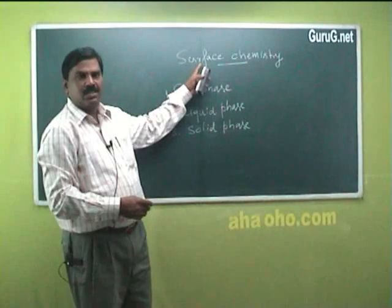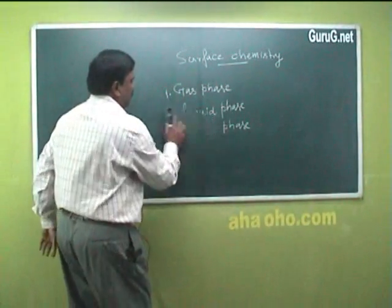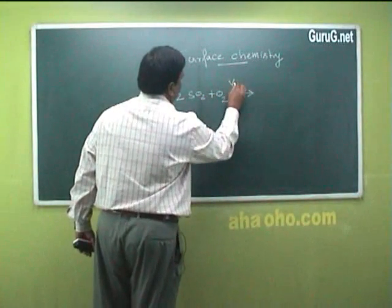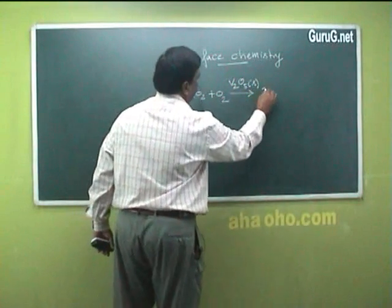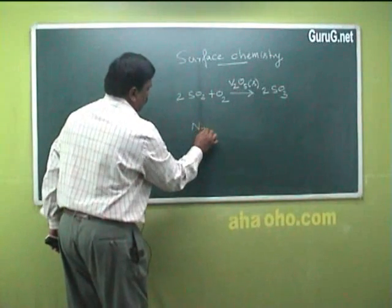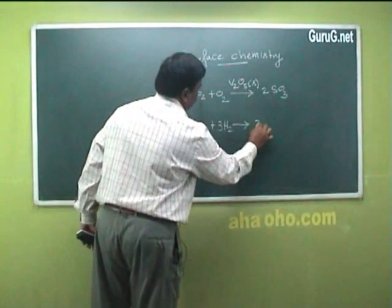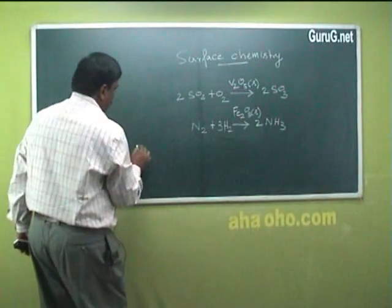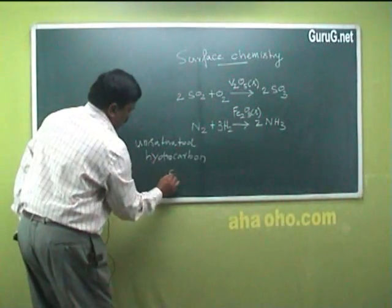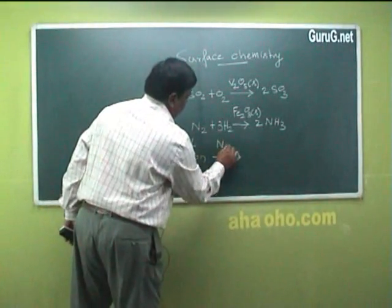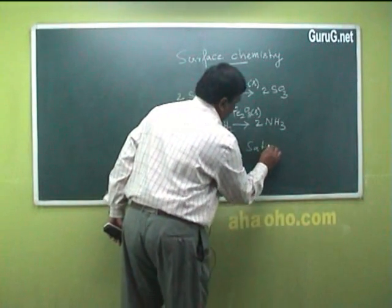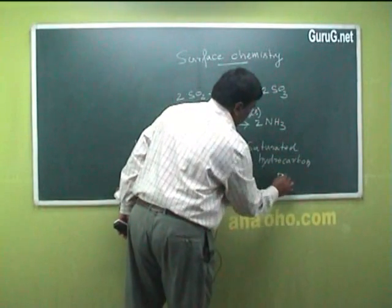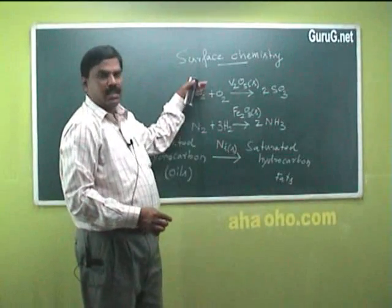What is surface chemistry? Surface chemistry is nothing but the reactions that take place on the solid surface. For example: synthesis of SO3 — 2SO2 + O2 on V2O5 solid gives 2SO3; N2 + 3H2 on Fe2O3 gives 2NH3; and unsaturated hydrocarbon (oils) on nickel surface gives saturated hydrocarbon (fats). These three reactions are examples of surface reactions.